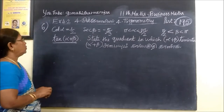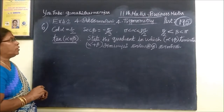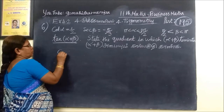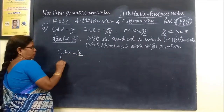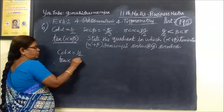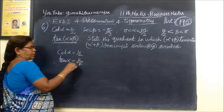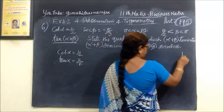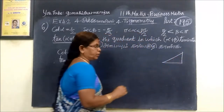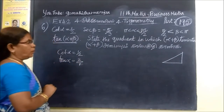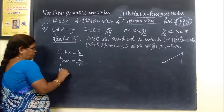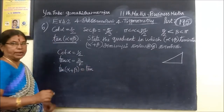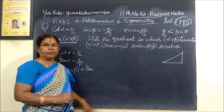Question number 6. We use the formula of tan of alpha plus beta. Tan of alpha plus beta equals tan a plus tan b, divided by 1 minus tan a times tan b.